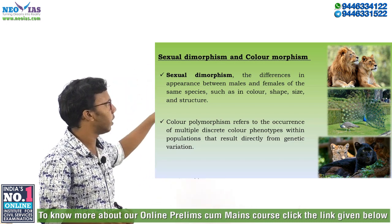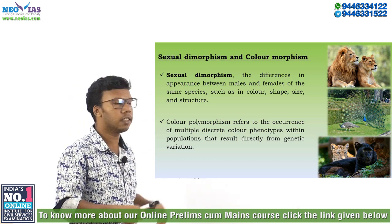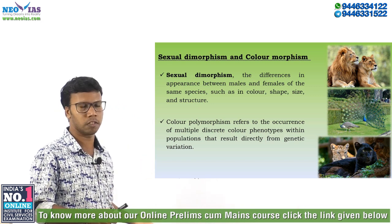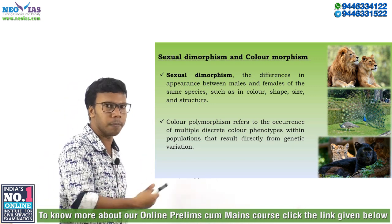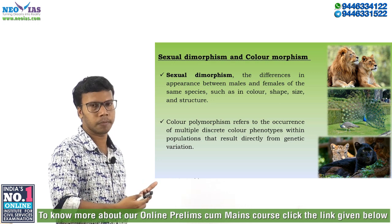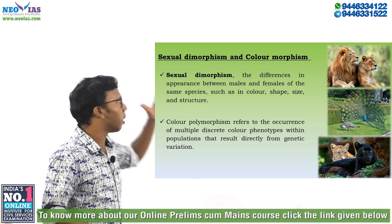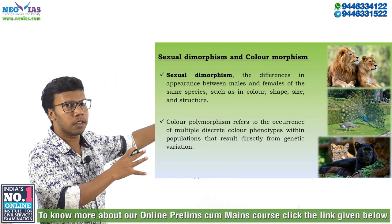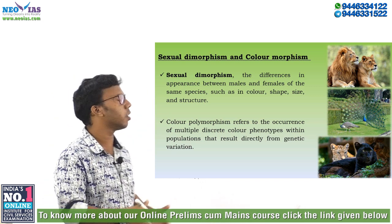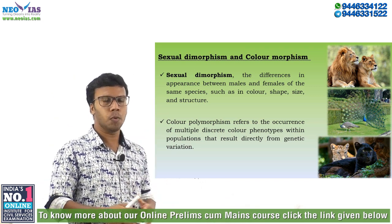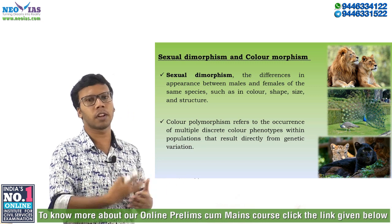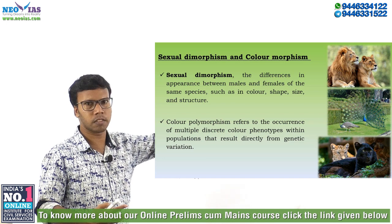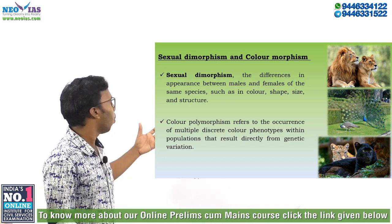Sexual dimorphism is the difference in appearance between males and females of the same species in terms of color, shape, weight, or height. In other words, it is the condition where two sexes of the same species exhibit different characteristics beyond the difference in their sexual organs.